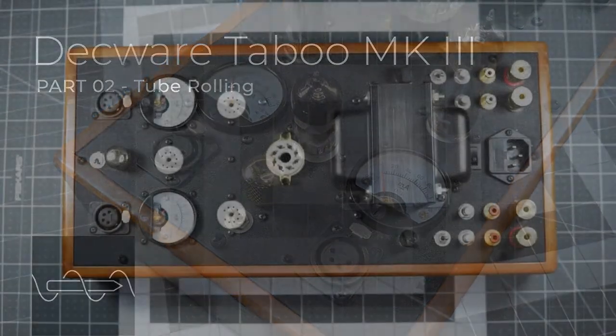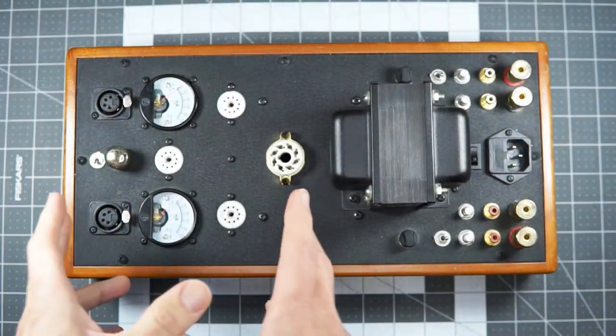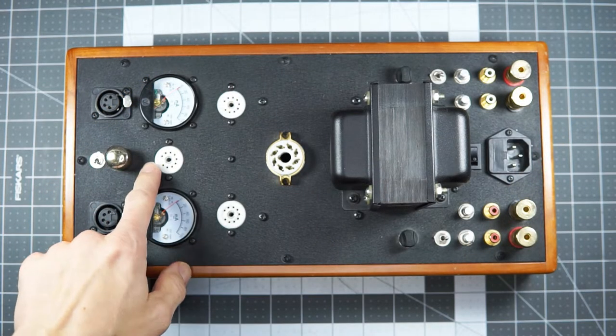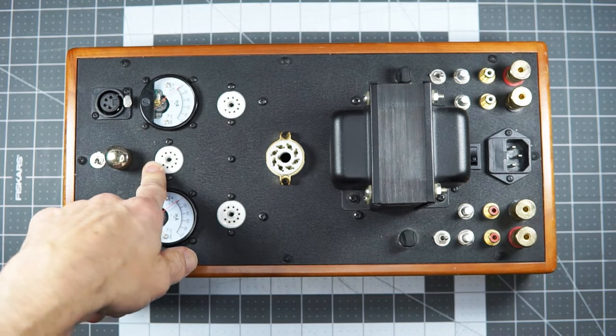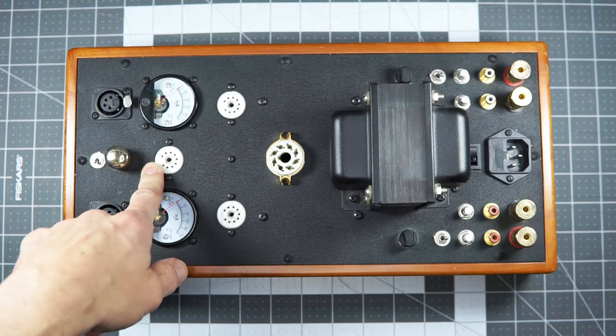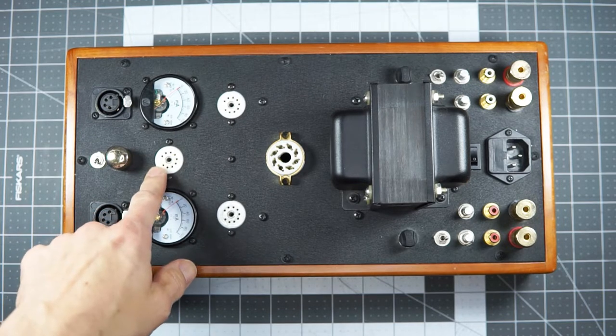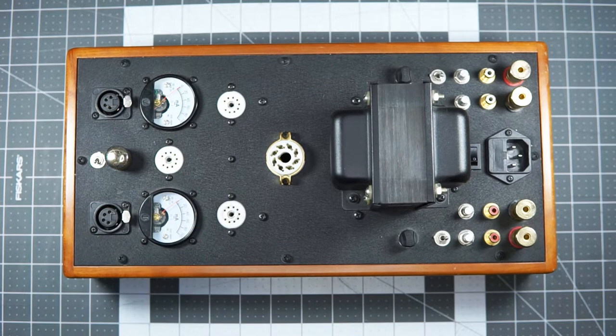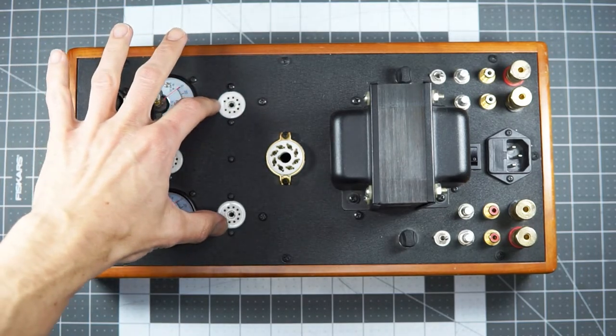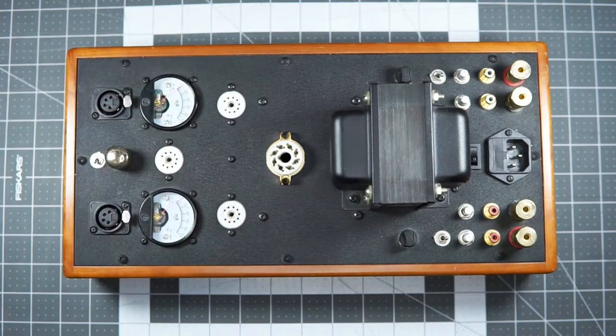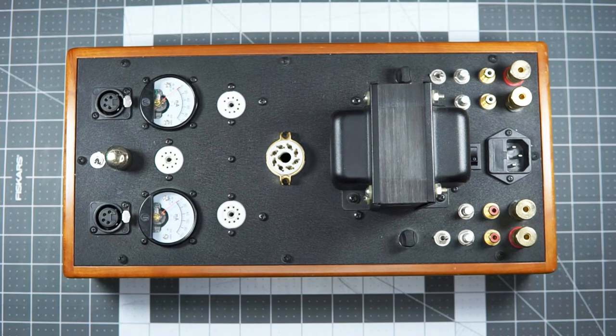Okay, so Decware. Four tubes. The first tube is the input tube. It's a single tube. It's typically a 6922 or a 6N1P, but you can actually run all kinds of things in there. These two are the output power tubes. So that would typically be an SV83, an EL84, a 6BQ5.